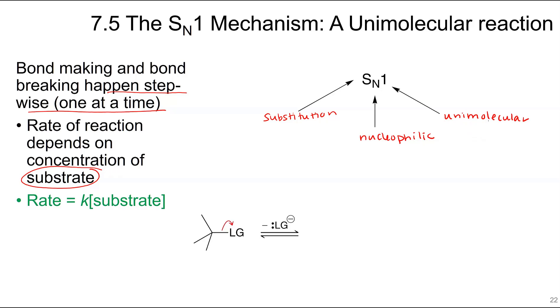The mechanism of the SN1 reaction involves first the leaving group leaving. So there's a loss of leaving group. When that happens, we form a carbocation. And then a nucleophile comes in, which could be any generic nucleophile. This is your nucleophilic hug with the nucleophile.